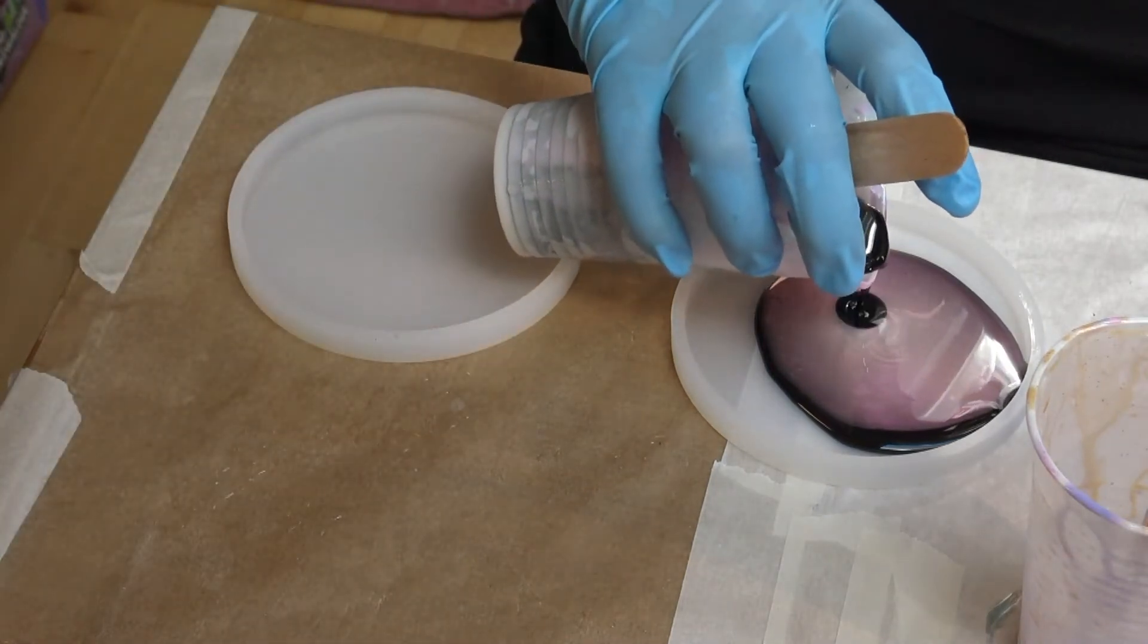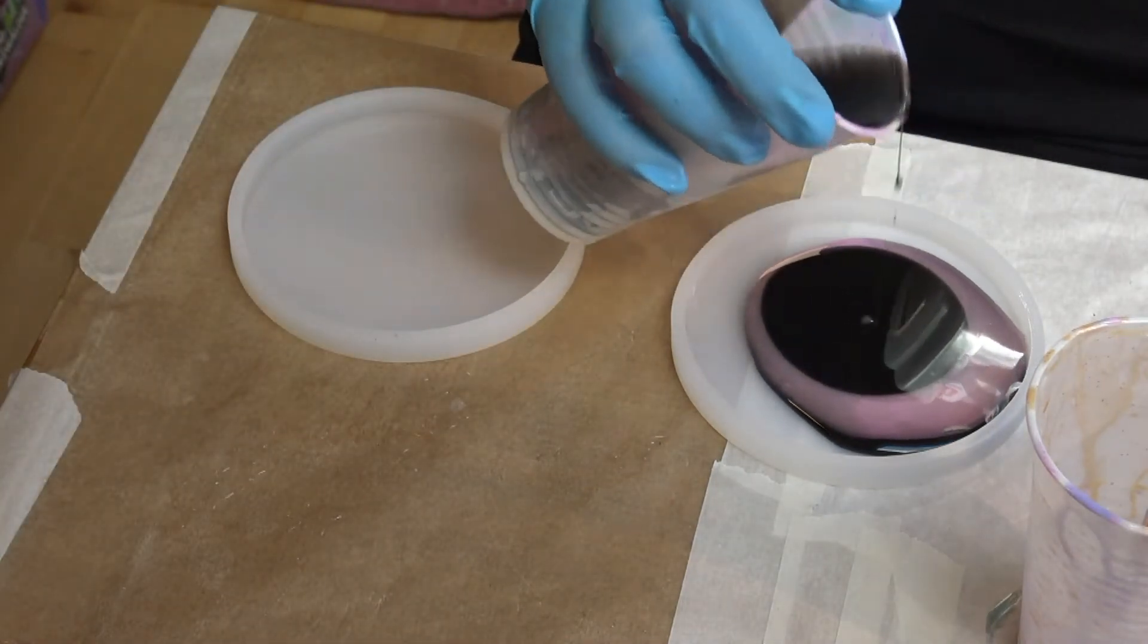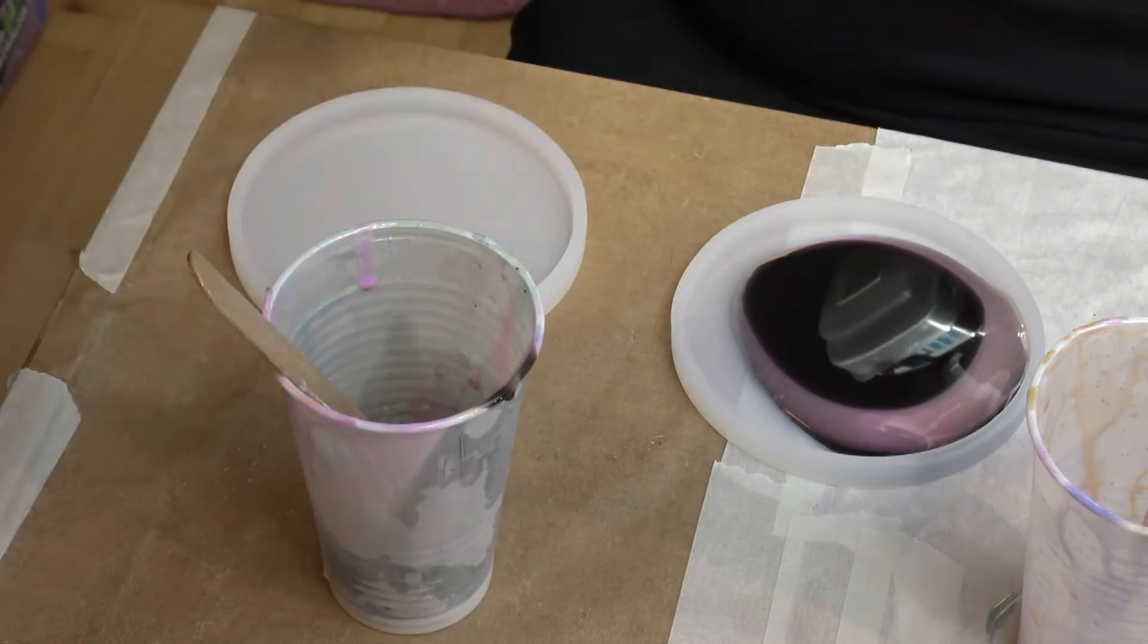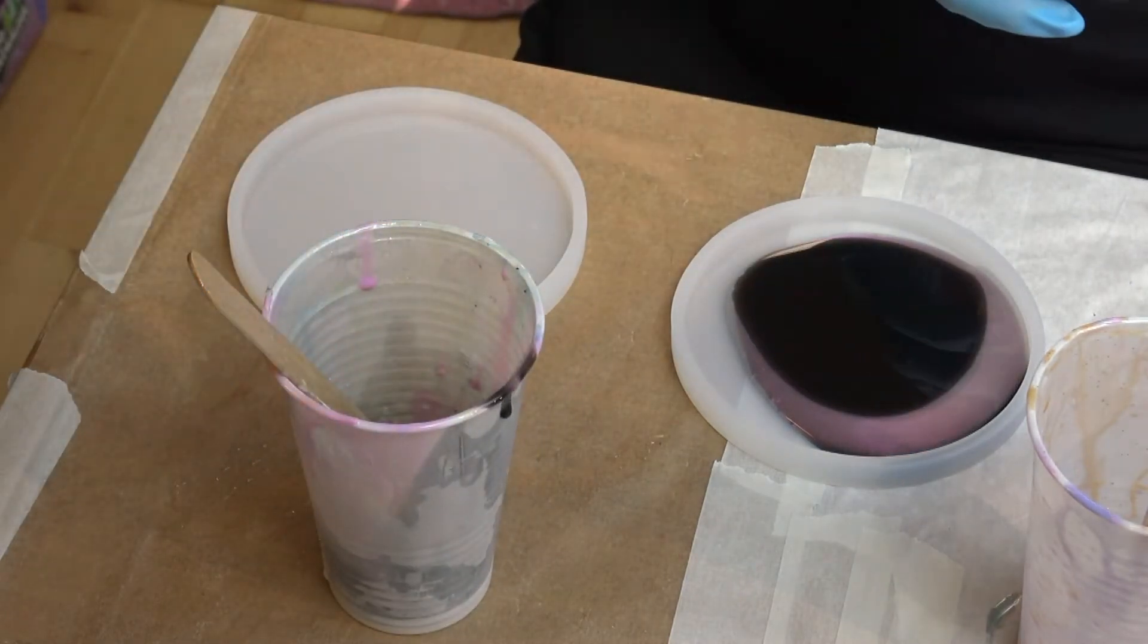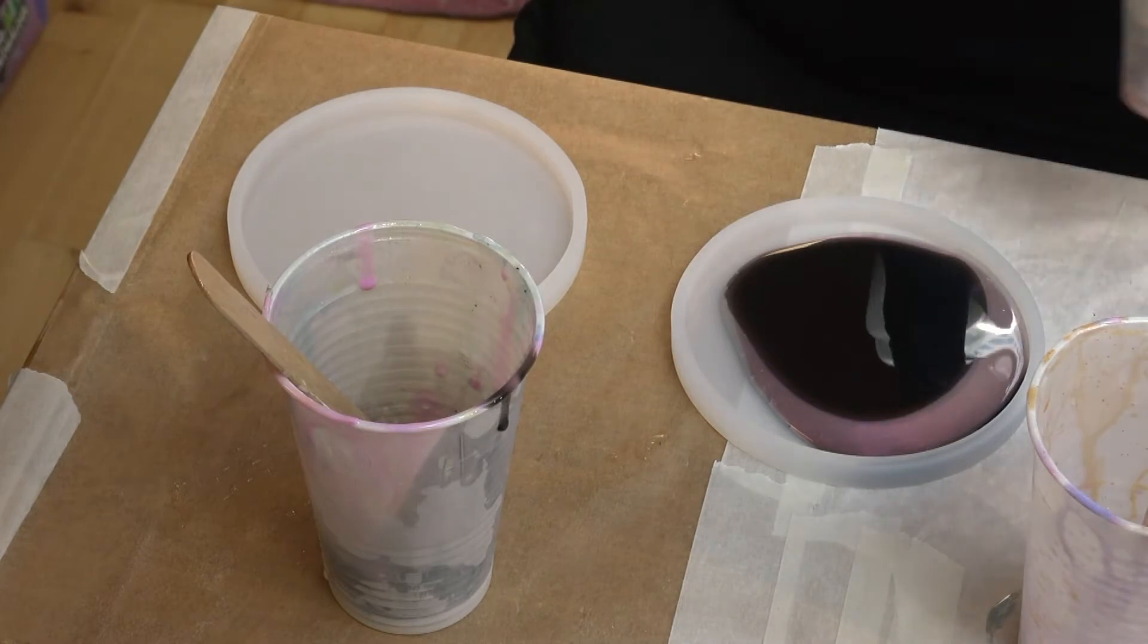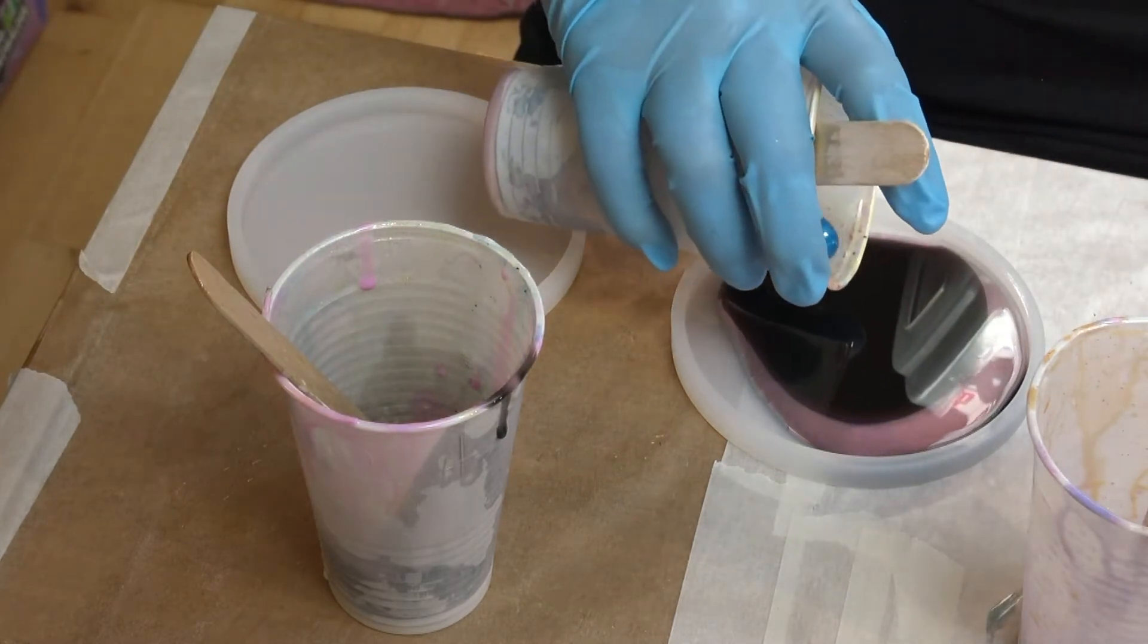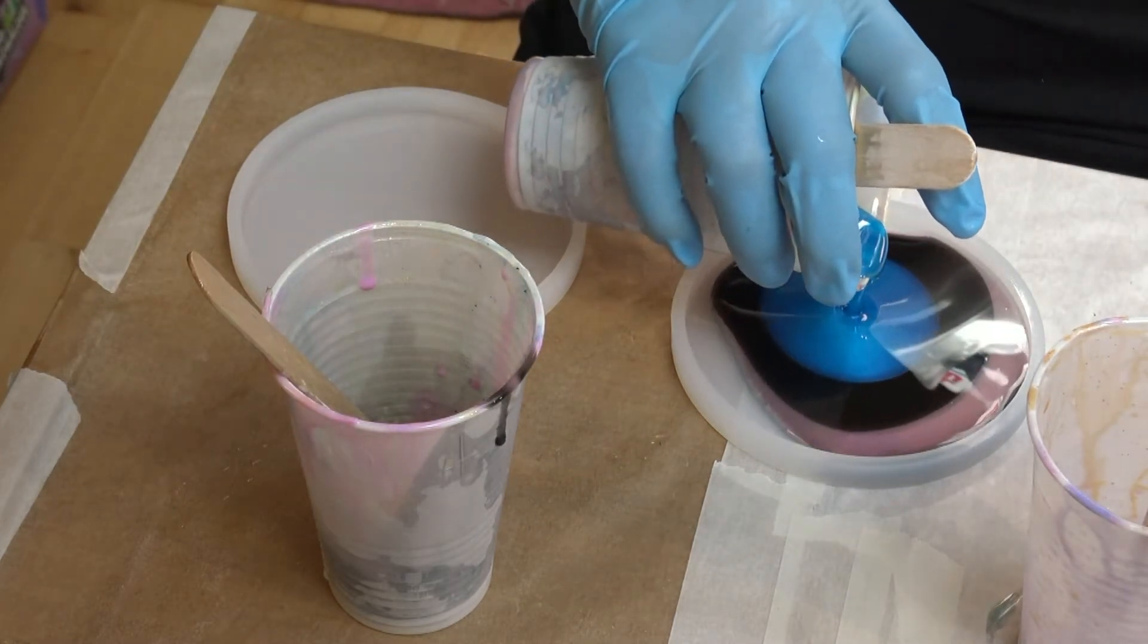And then I put some more black transparent in there, and then I have the blue mica powder colored resin. And as you see, I'm alternating it.